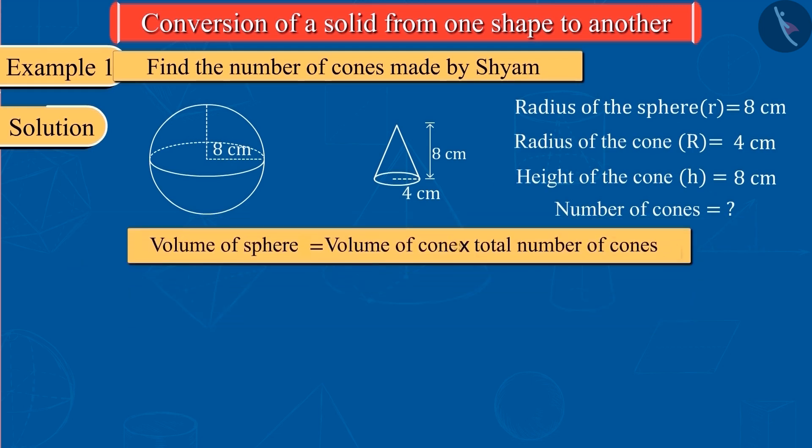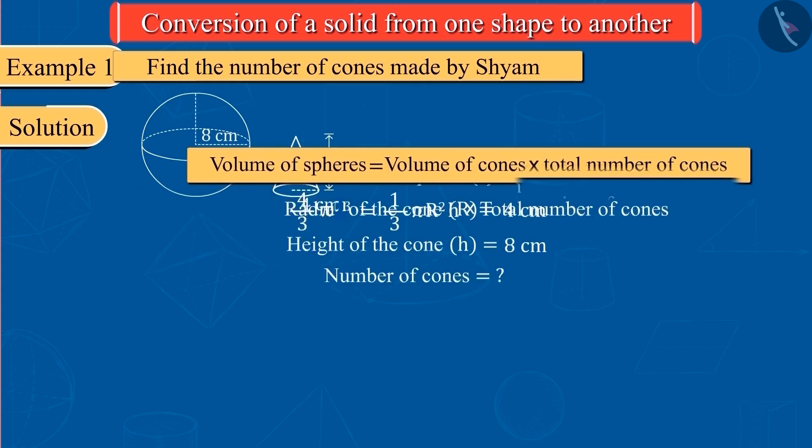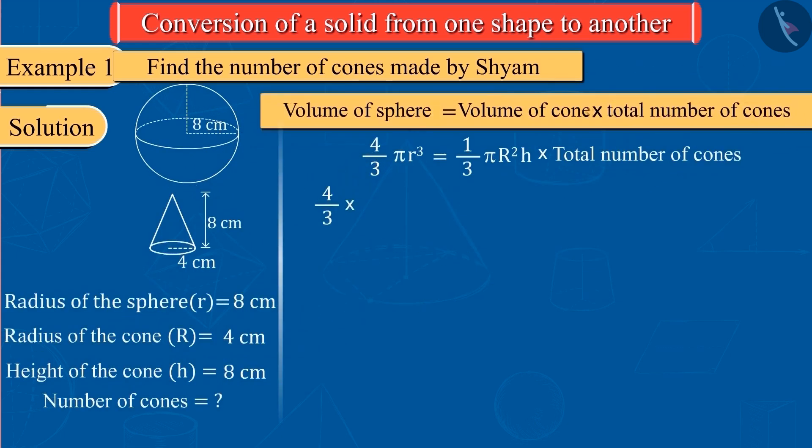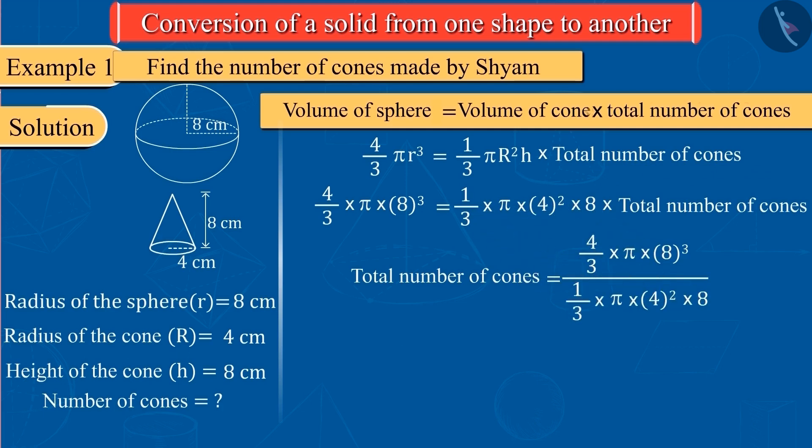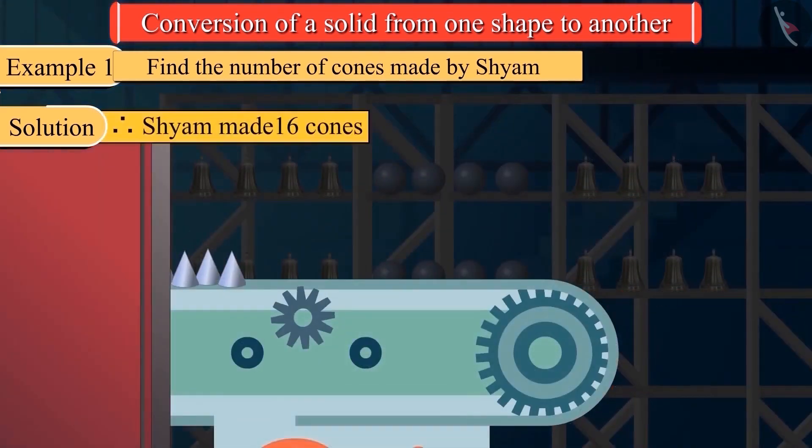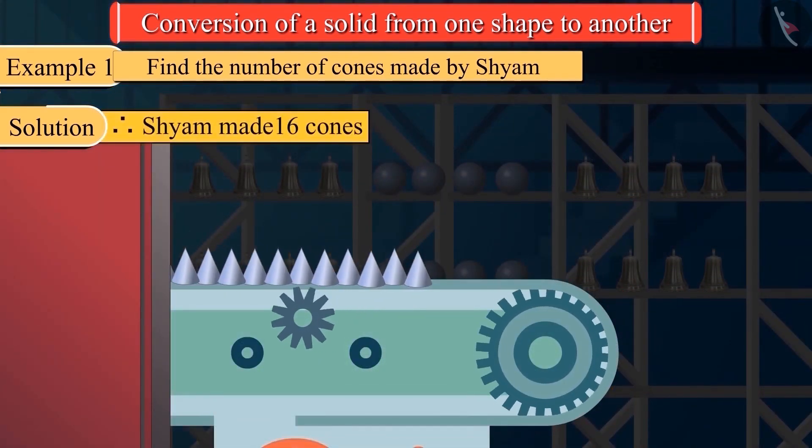We know that the volume of sphere and cone can be determined by these formulas. Substituting all values, we get 16. So, Shyam makes 16 cones in this way.